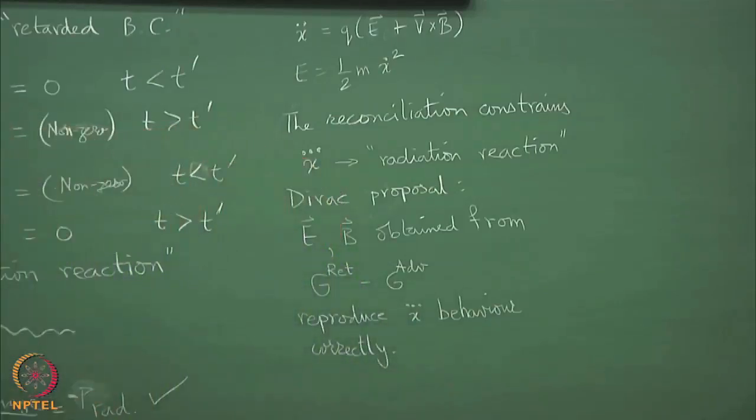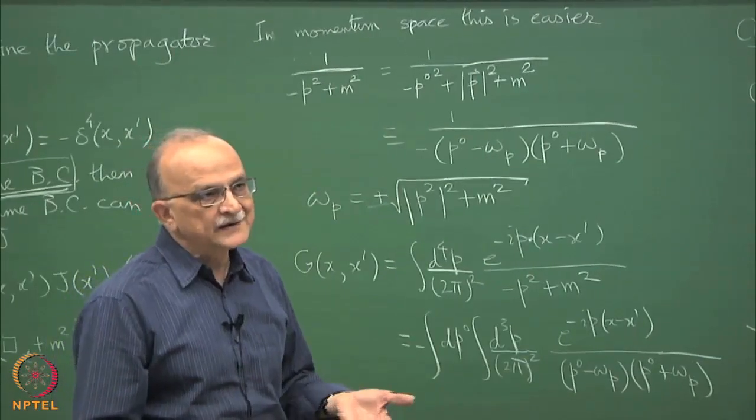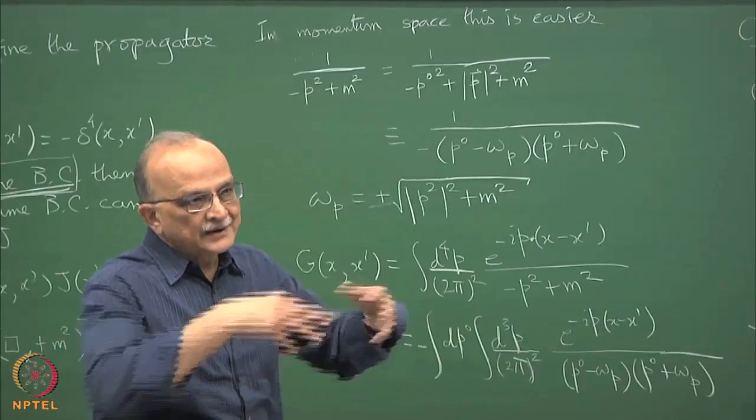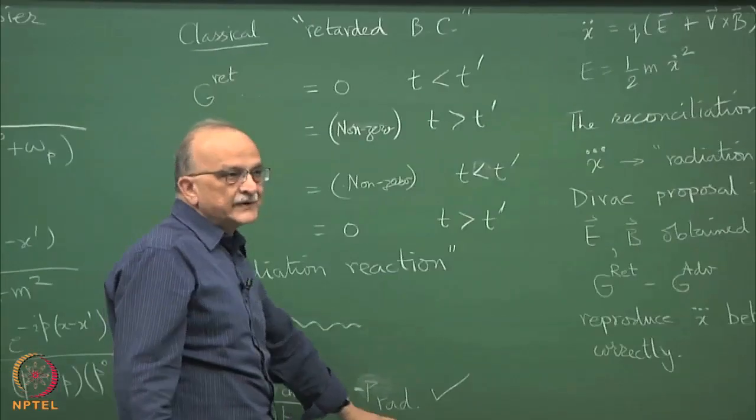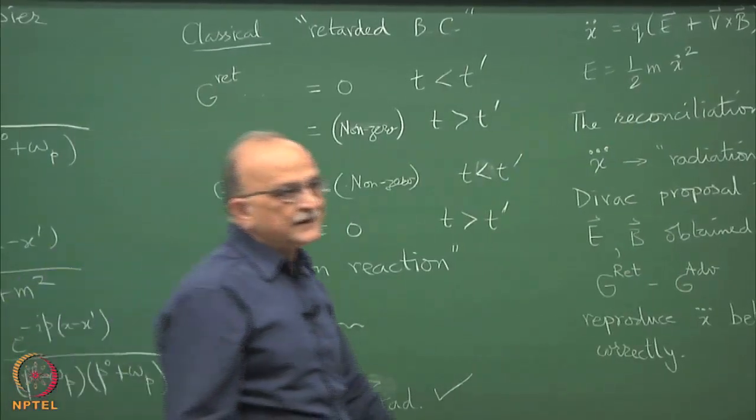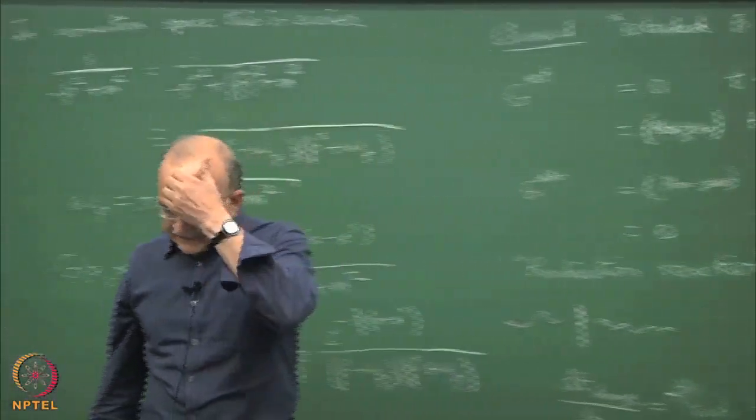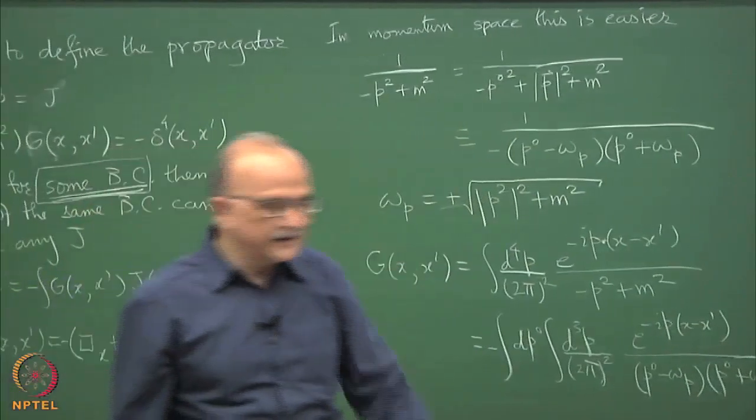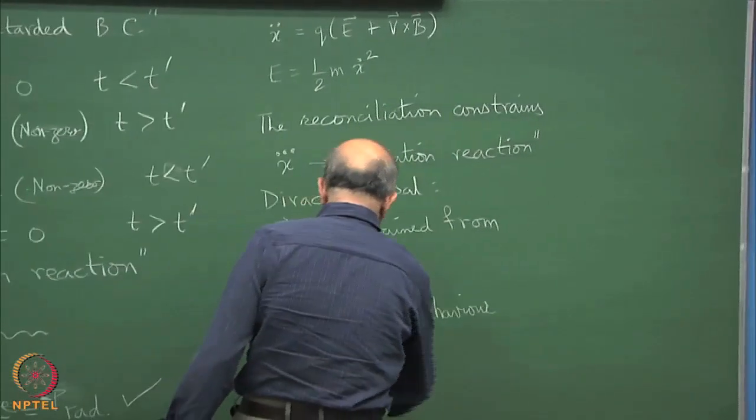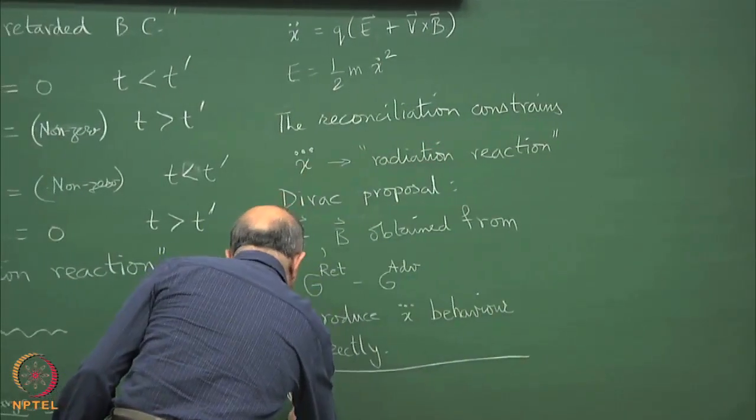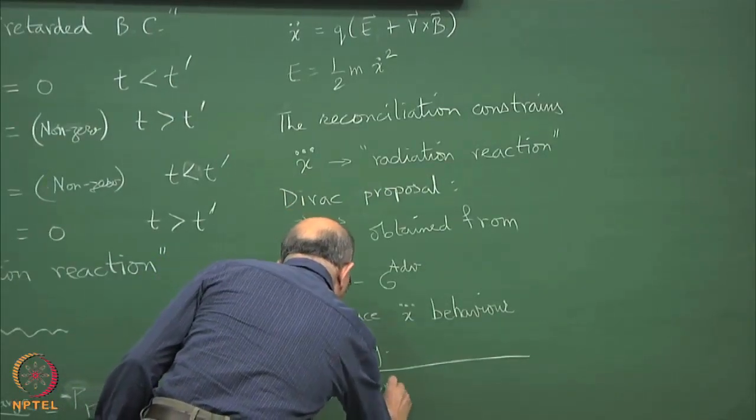So Dirac prescription, not to be mixed with that prescription, but Dirac proposal: E, B obtained from G retarded minus advance reproduce radiation behavior correctly. Because only G by itself would be divergent at the source, but if you do G retarded minus advance then it exactly cancels out the local fields and retains only the radiation zone fields. That correctly has in it behavior of the radiation zone fields. This tickled everybody's mind why it was retarded minus advance. So Wheeler and Feynman tried to create a system for this which is called absorber theory.